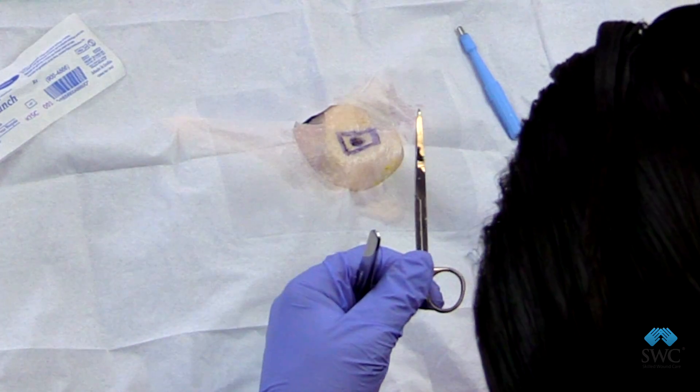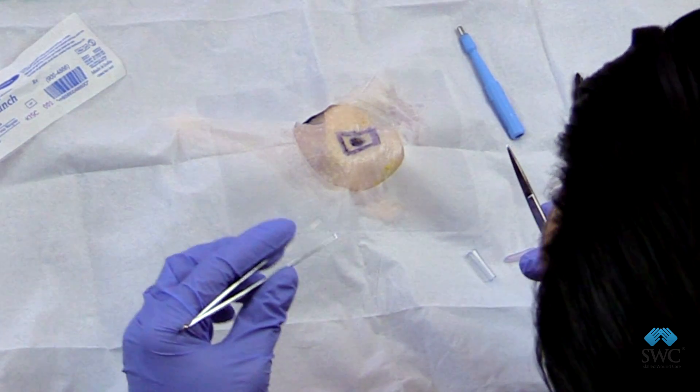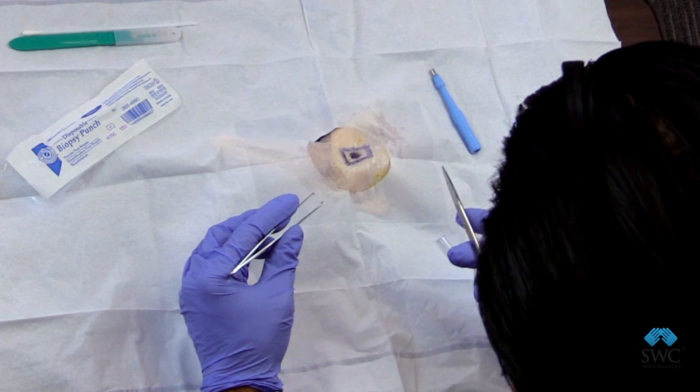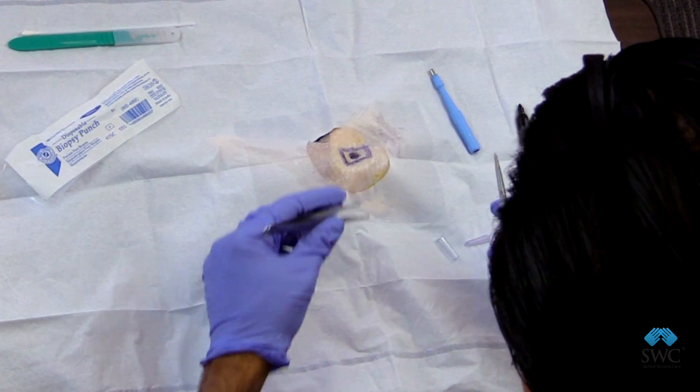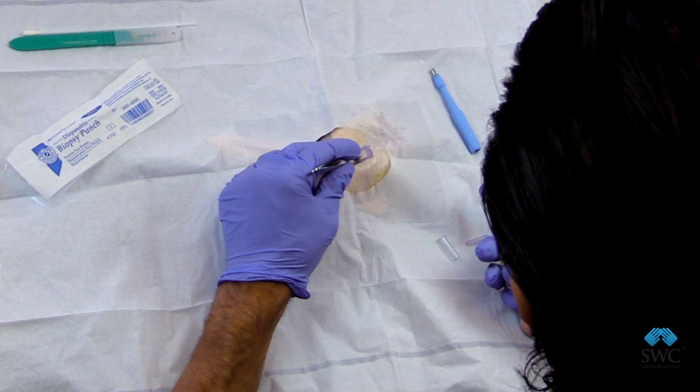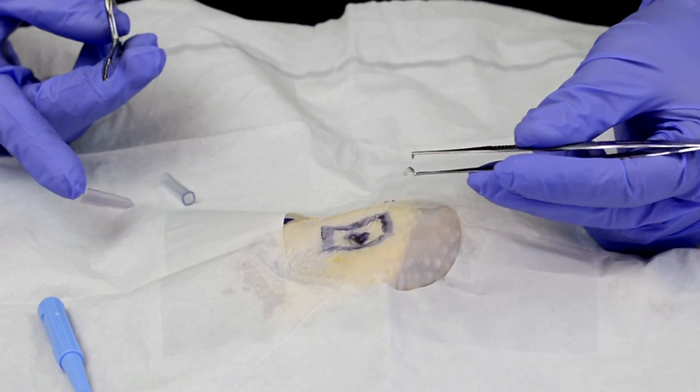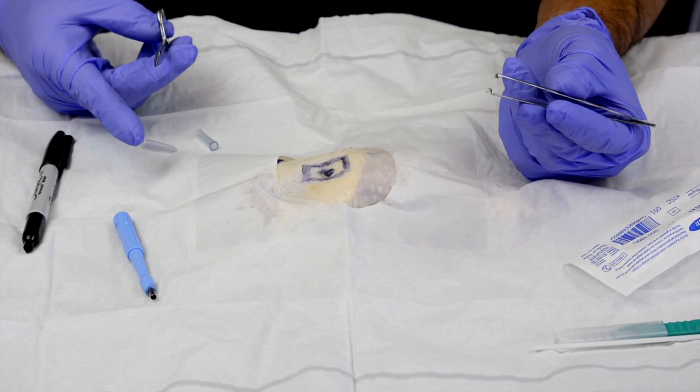I'm going to get scissors and tissue forceps. The key is, for demonstration purposes we have a tooth forcep, but you want to get something that is very gentle. Go ahead and grab the tissue itself and bring it out, and here it is.